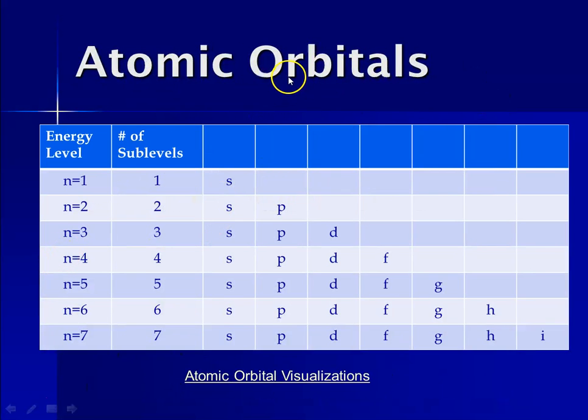Now when we're doing a summary of all of this, we have our principal energy level, and then we have the number of sublevels that can take place at a particular level. At the first principal energy level, the energy level closest to the nucleus, there's one sublevel and its flavor is s. At n equals 2, there are two sublevels, the s and the p flavors. At n equals 3, there are three sublevels: s, p, and d. At n equals 4: s, p, d, and f, four sublevels. We're not going to go beyond the fourth principal energy level.